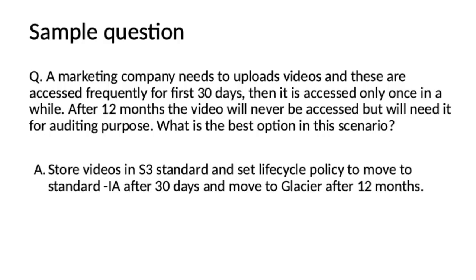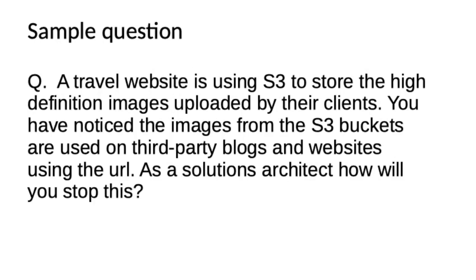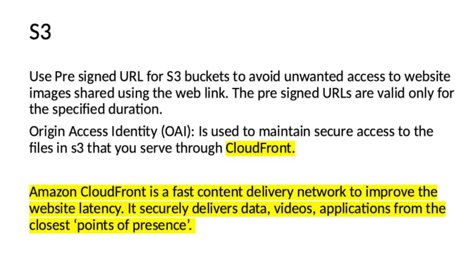Another question: A travel website is using S3 to store high-definition images uploaded by their clients. You have noticed the images from the S3 buckets are used on third-party blogs and websites using the URL. As a solution architect, how will you stop this? In S3, there is an option to use pre-signed URLs to avoid unwanted access — the pre-signed URLs are valid only for a specific duration. Another thing is Origin Access Identity (OAI), which is used to maintain secure access to files in S3 served through CloudFront. CloudFront is a fast content delivery network that improves website latency, securely delivering data, videos, and applications from the closest point of presence.